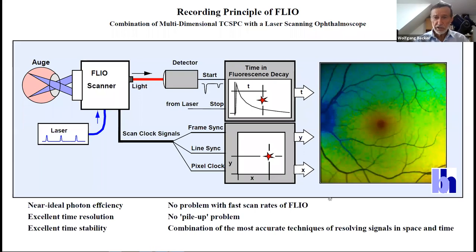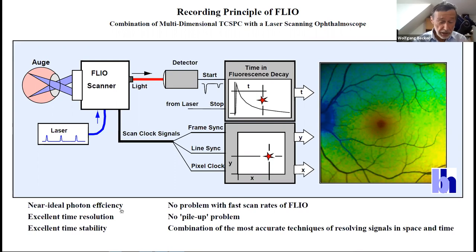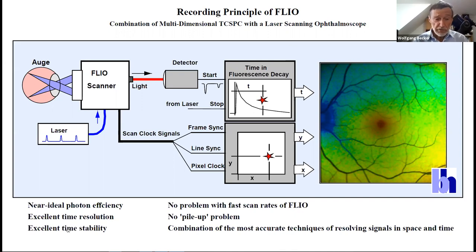This works with near ideal photon efficiency—not only does every photon get detected, but we also get very clean fluorescence decay curves from which we can efficiently derive the fluorescence lifetime. We have excellent time resolution, coming from this detection process; the time of photon detection can be determined with very high precision. With the detector used in FLIO, the precision of this detection is about 100 picoseconds. Even more importantly, we have excellent timing stability—we need timing stability better than 50 picoseconds, and this process can reach that.